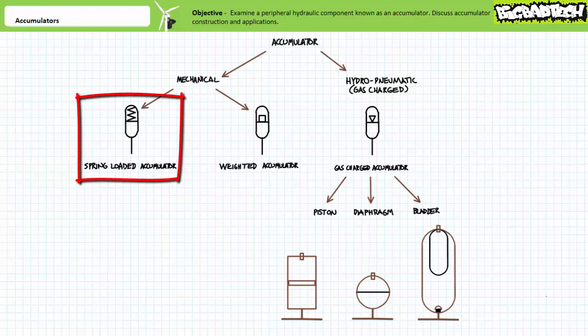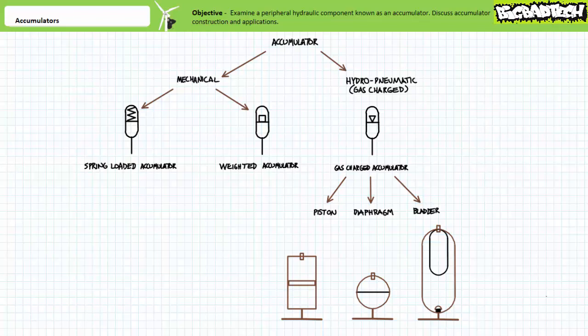A spring-loaded accumulator applies force to a stored liquid by means of a spring acting on a piston. If fluid pressure drops, the spring returns to its expanded state and returns energy to the system, thereby stabilizing its operation. Similarly, any pressure spikes or surges can also be absorbed by the spring, quite like a shock absorber. Sometimes spring-loaded accumulators include a mechanical stop that prevents the highly pressurized system from over-compressing the spring and damaging the accumulator.